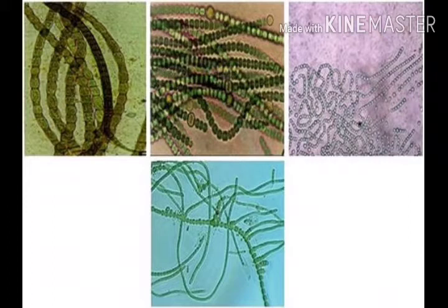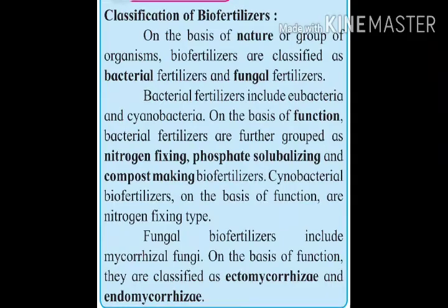Examples of cyanobacterial bio-fertilizers include Anabaena, Nostoc, Plectonema, Oscillatoria, etc. Among these, Anabaena, Nostoc, and Tolypothrix are associated with lichens, while Anabaena is also associated with plants like Azolla and Cycas. So here they are living in a symbiotic association, and we will study the symbiotic association of Anabaena and Azolla in the next class.